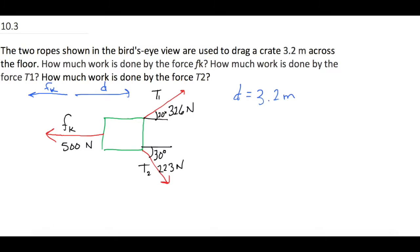Since we're going in the direction of T1 and T2, the angles we use for both of those are 20 and 30 degrees. The angle we use for friction is going to be 180 degrees.